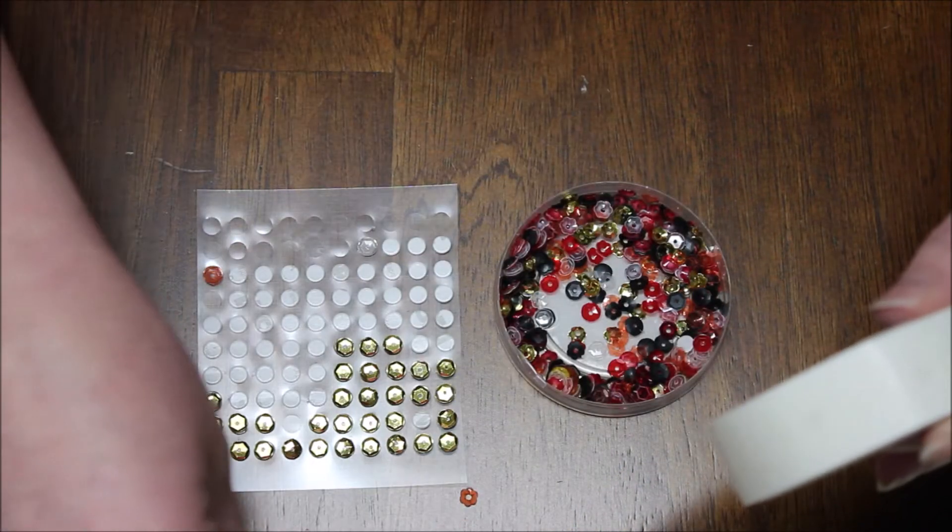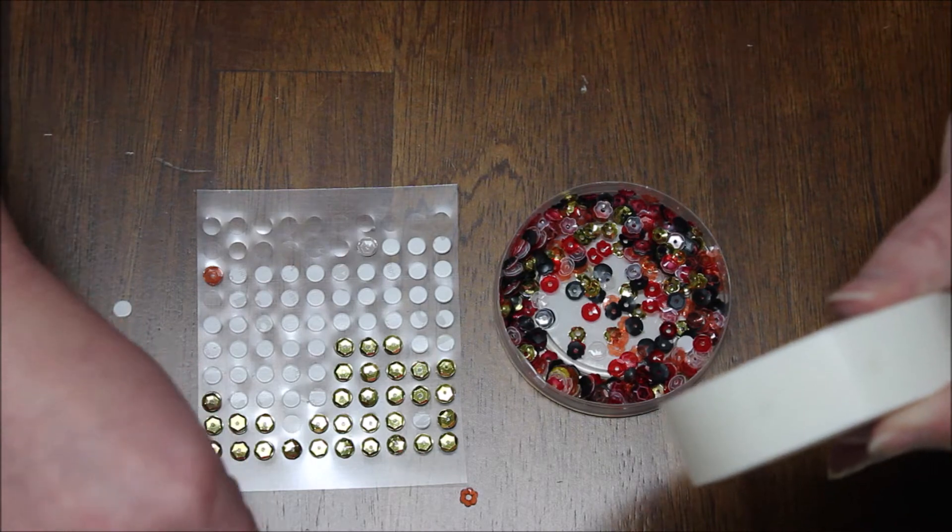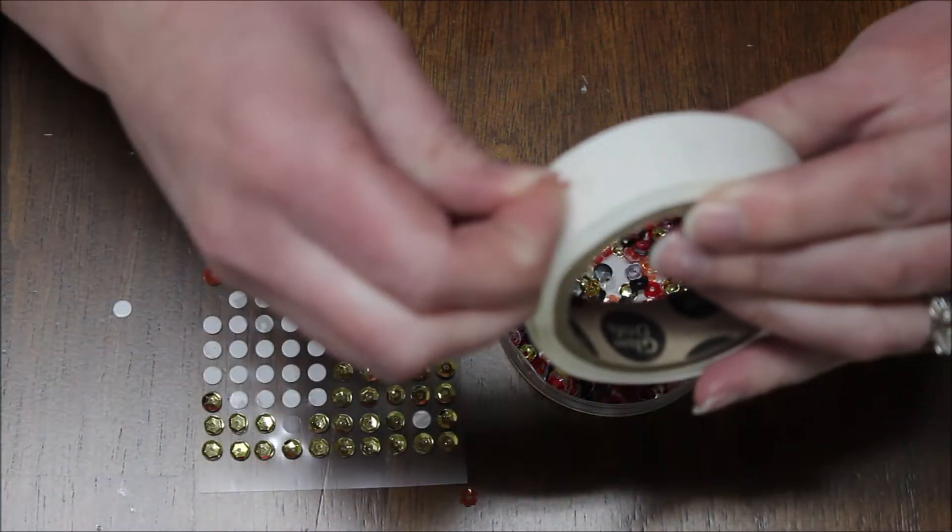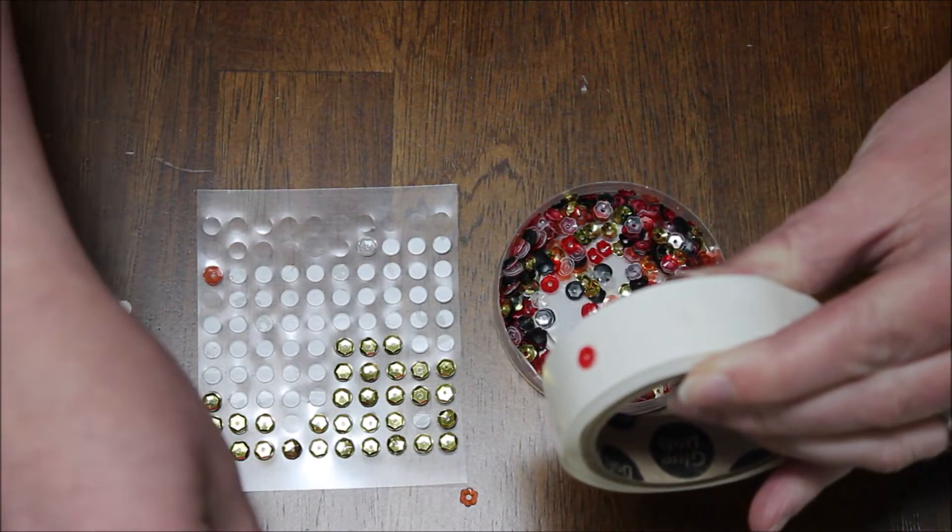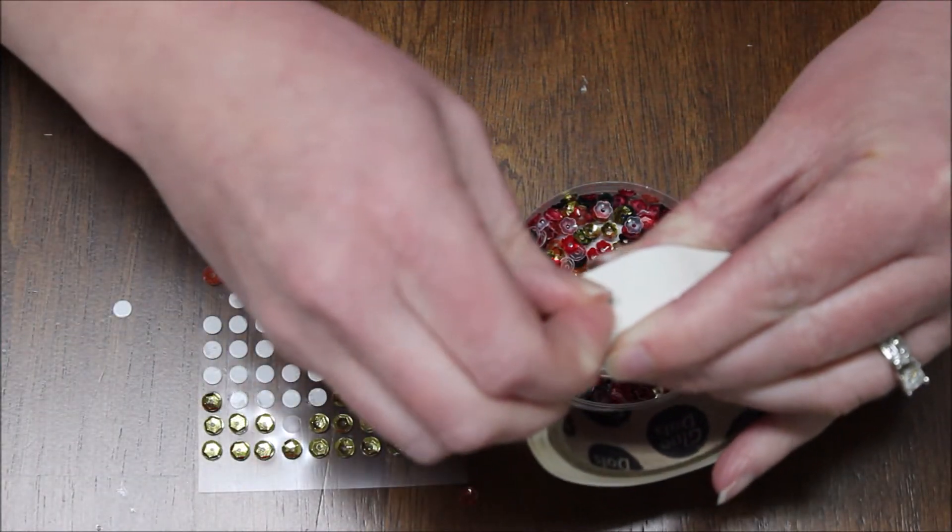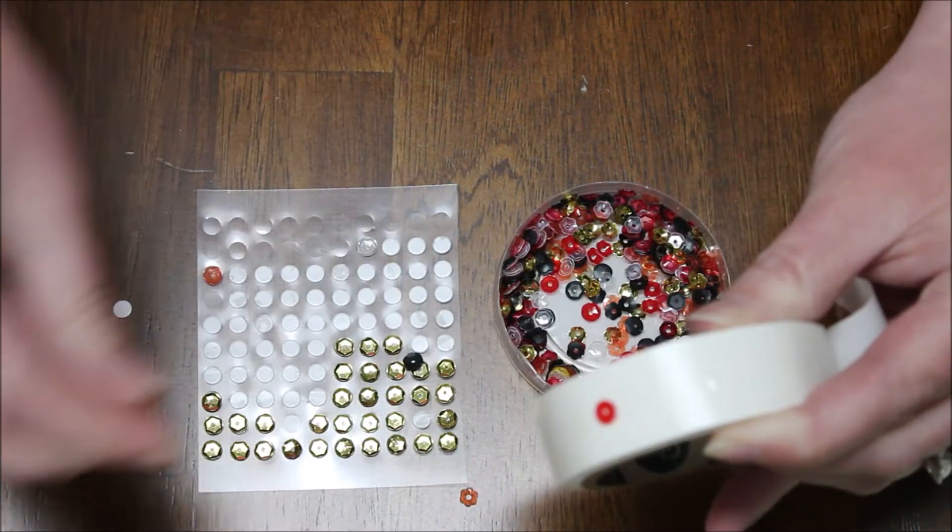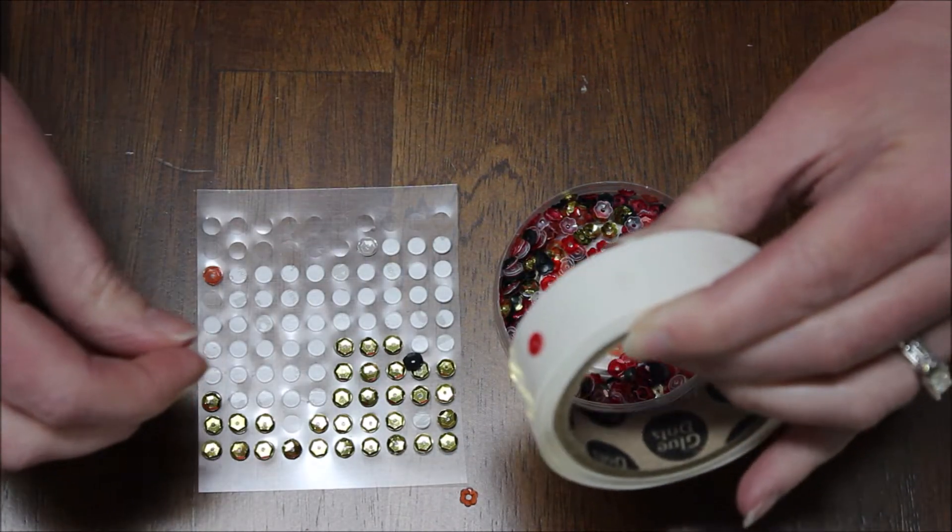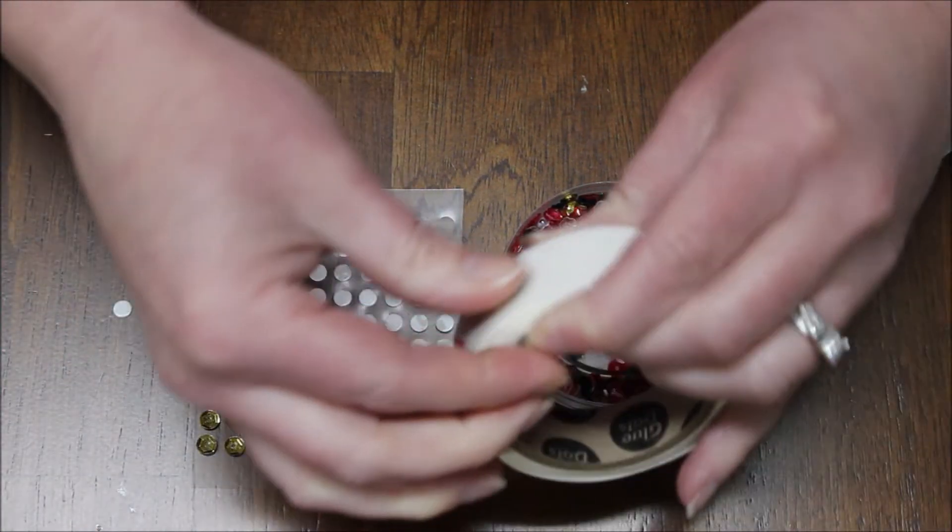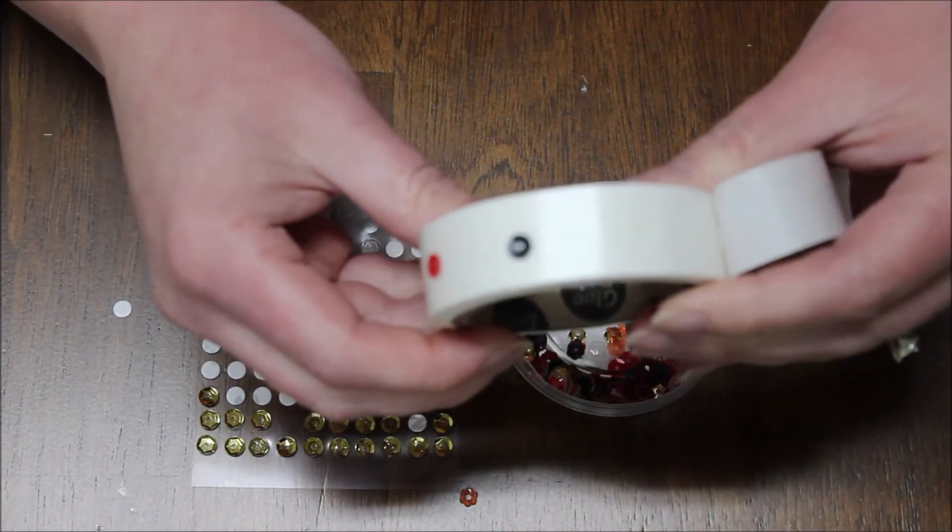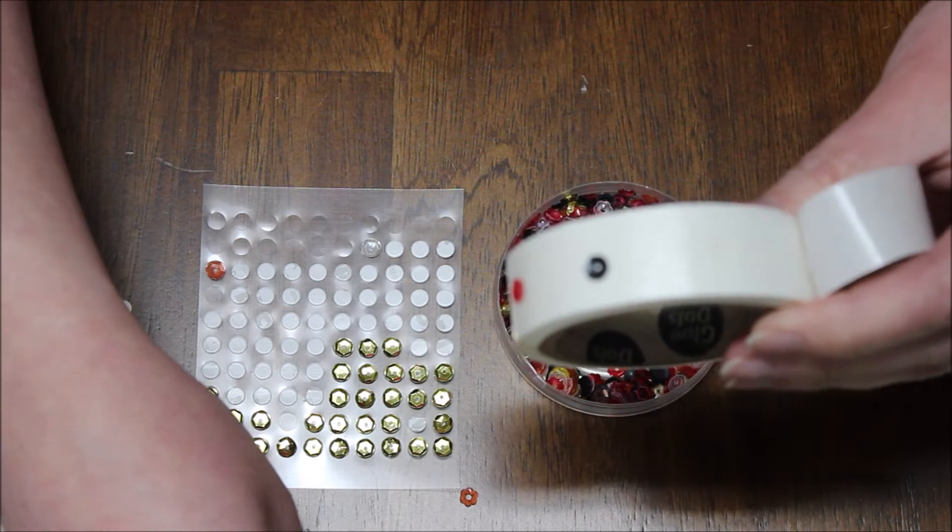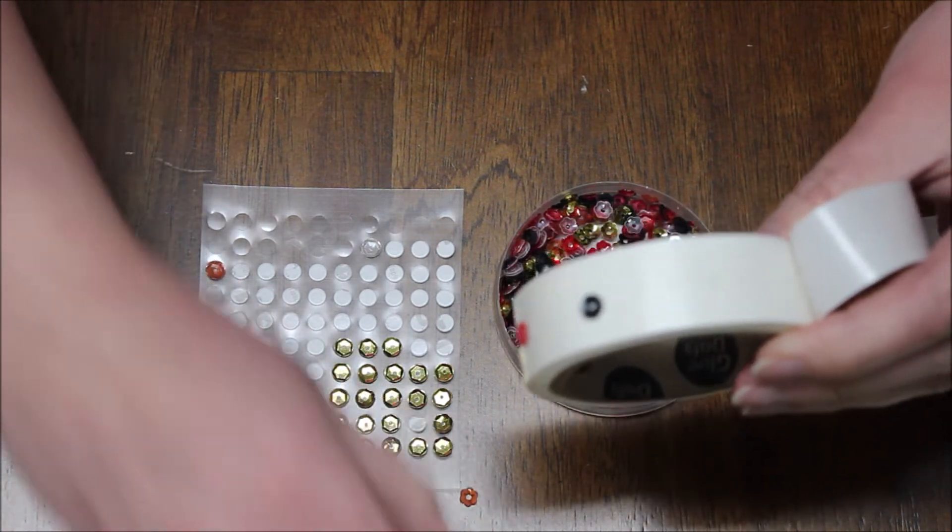And I can't pick up just one sequin, so I'm just going to pour some out here. So then you can just press the sequins right onto that little glue dot. So if you couldn't see them before, you can now see them. Oh, and that one just popped right off. Where did it go? So now you can definitely see where they're at because they show up a lot better than those clear little mini glue dots.